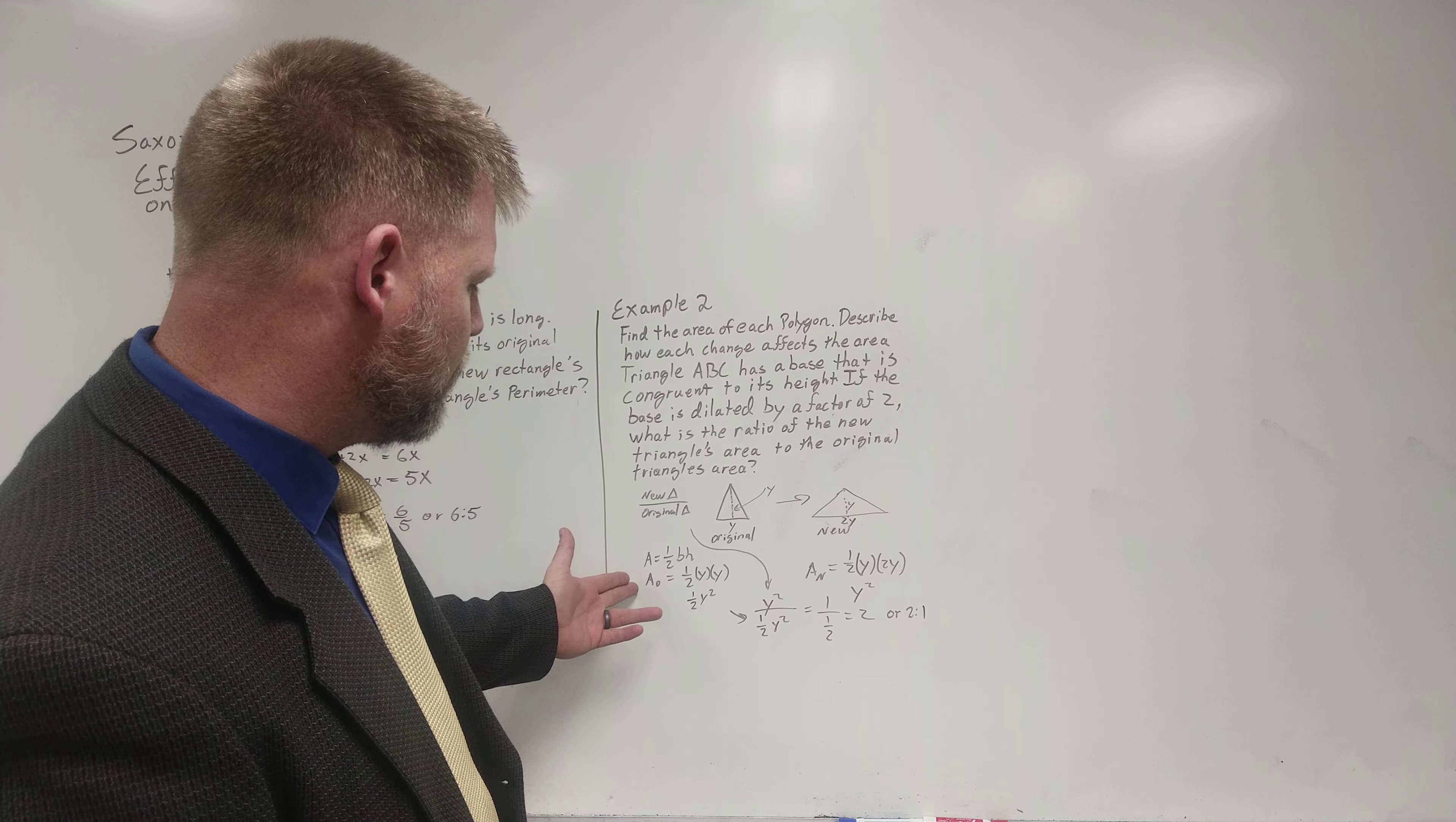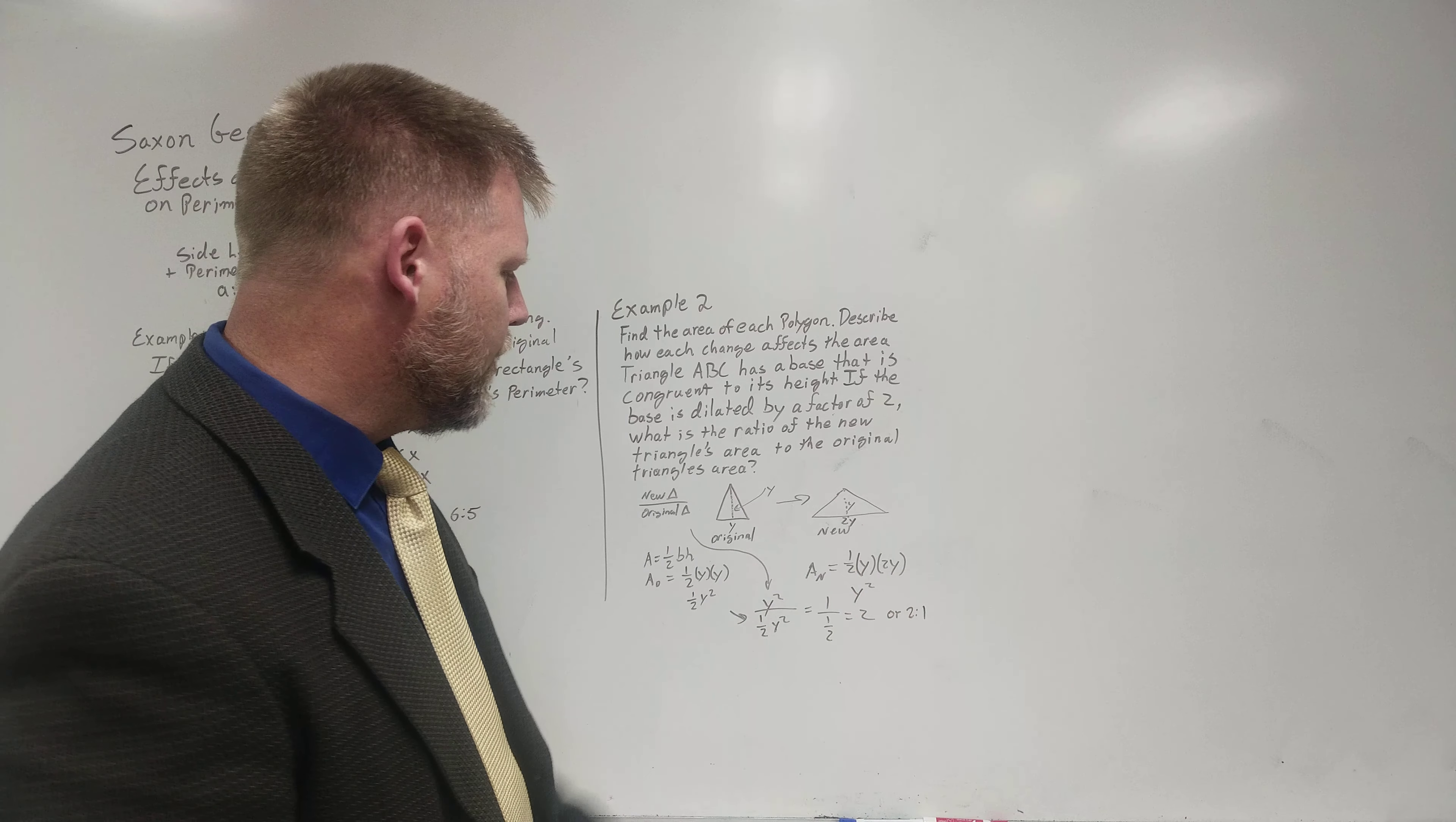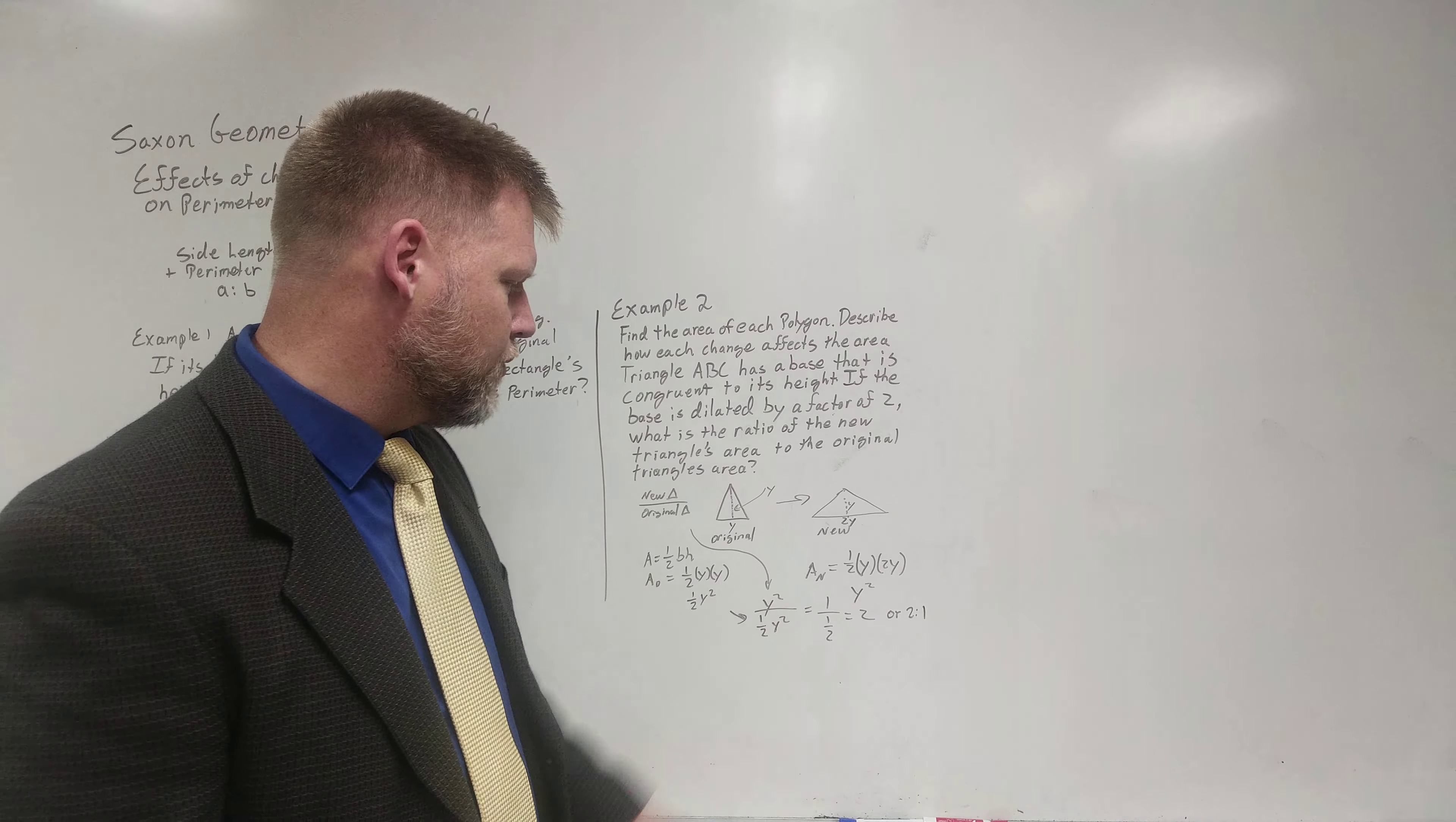It's one half of base times height. One half yy, which is one half y squared. The new one is one half, right? Times y times two y. Now I go ahead and multiply that two times over one. It's just two. It's just gone. So it becomes one and it becomes y squared. So I'm going from original with one half y squared and I'm going to y square.